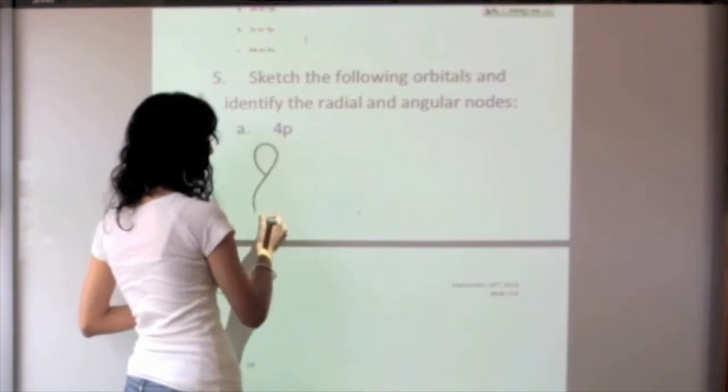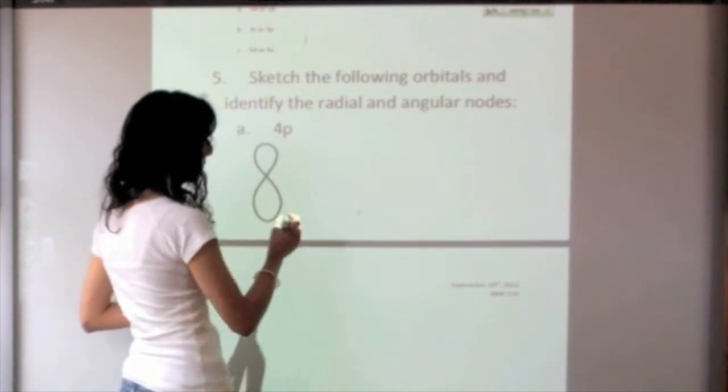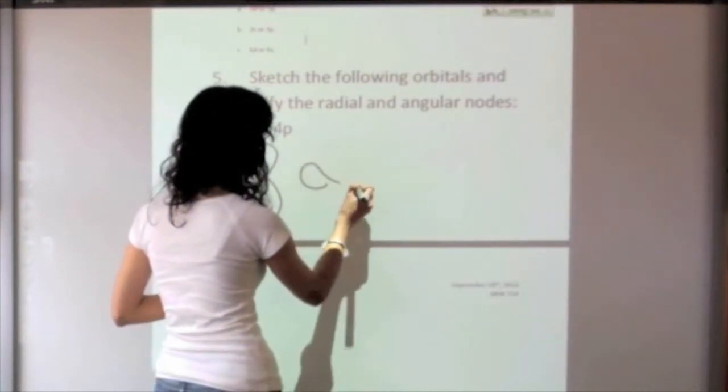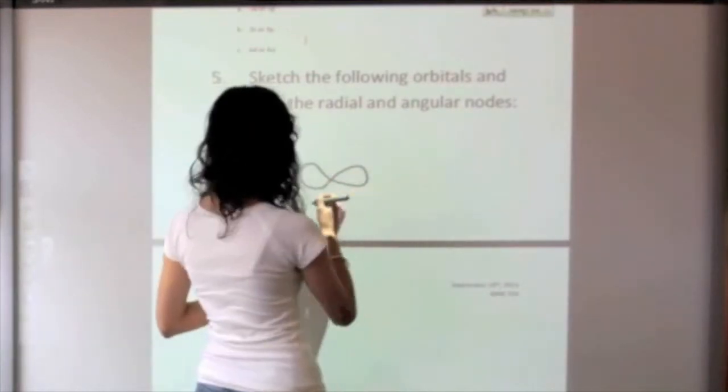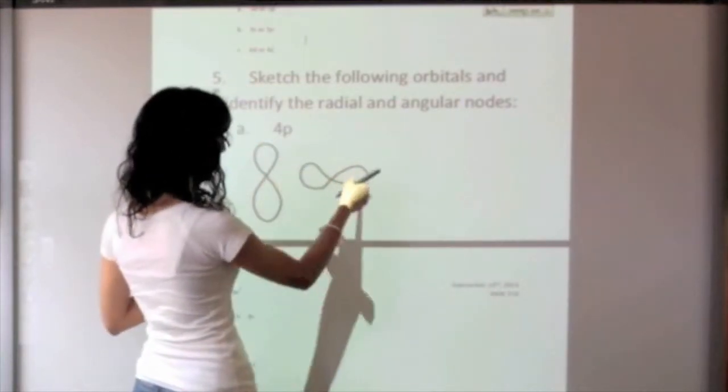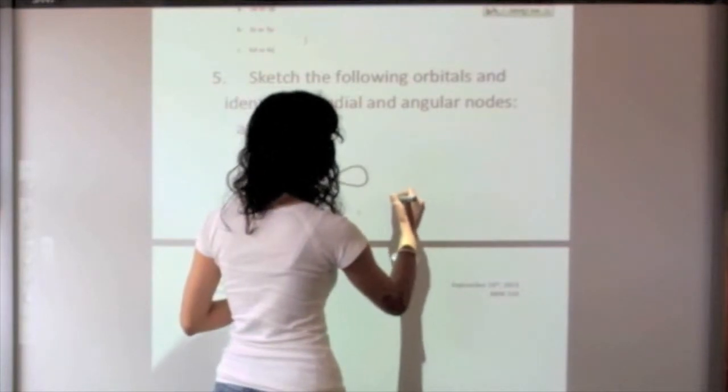The first thing to know is that this is the general shape of a p orbital. It could also go in this direction - you can call this Y, you can call this X, and you can call this the Z direction.